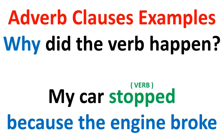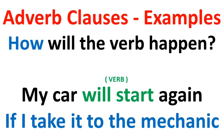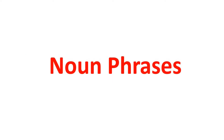Now let's look at some examples. In this example, I will tell you why the verb happened. You'll see the verb in green and the adverb clause in blue. My car stopped because the engine broke. 'Because the engine broke' is the adverb clause, and it comes immediately after the verb. Next, an example about when: My car will start again when the engine is fixed — 'when the engine is fixed' is your adverb clause. And for how: My car will start again if I take it to the mechanic — 'if I take it to the mechanic' is your adverb clause.